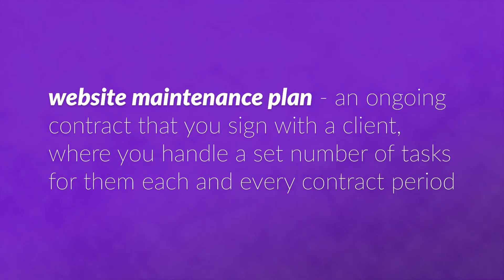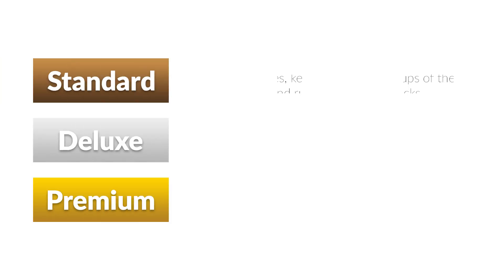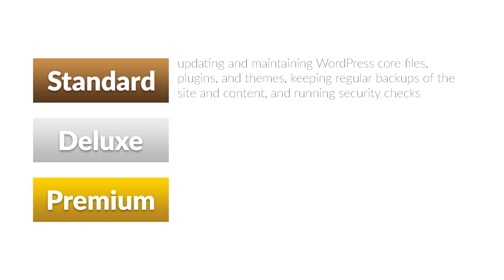First of all, tiers of service are common. This might be a standard, deluxe, or premium package. Standard maintenance might offer updating and maintaining WordPress core files, plugins, and themes, keeping regular backups of the site and content, and running security checks.